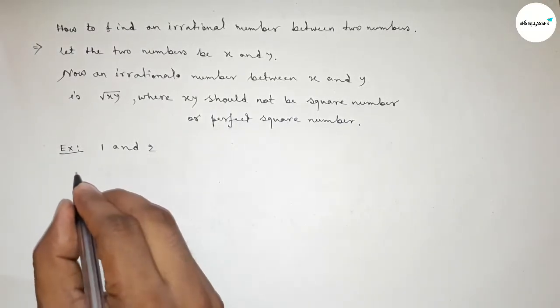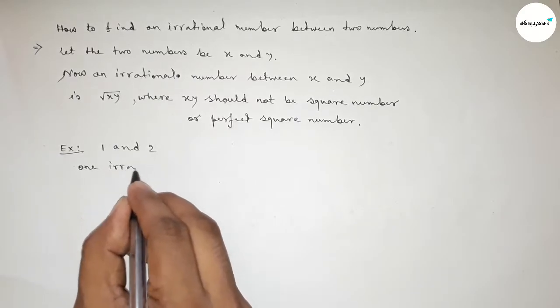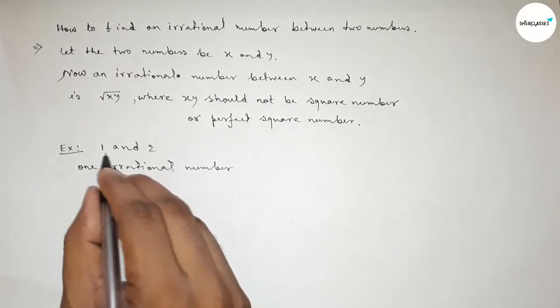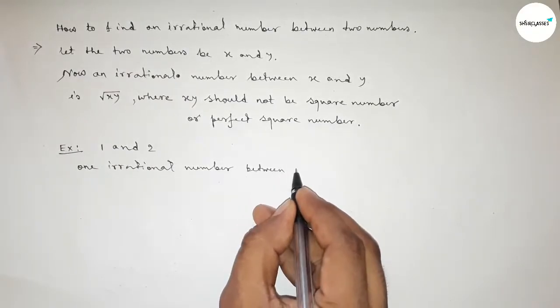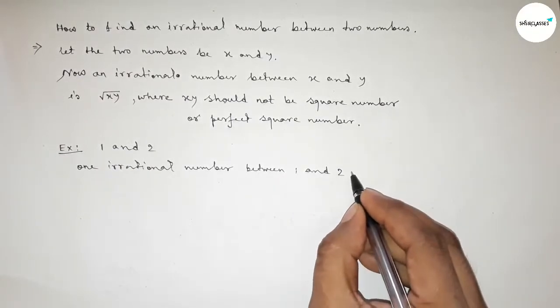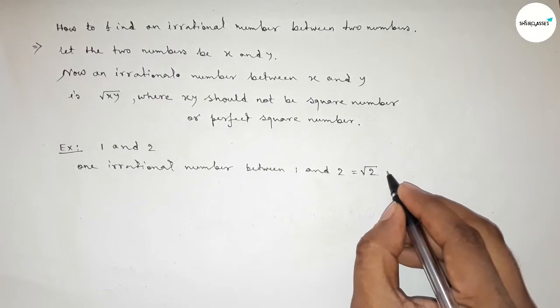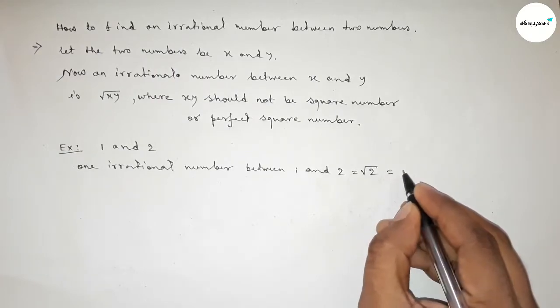Next I'm going to apply the above method. So one irrational number between 1 and 2 equals root over 1 into 2, and this is obviously an irrational number. And the value of root 2 equal to we can write 1.41421356...